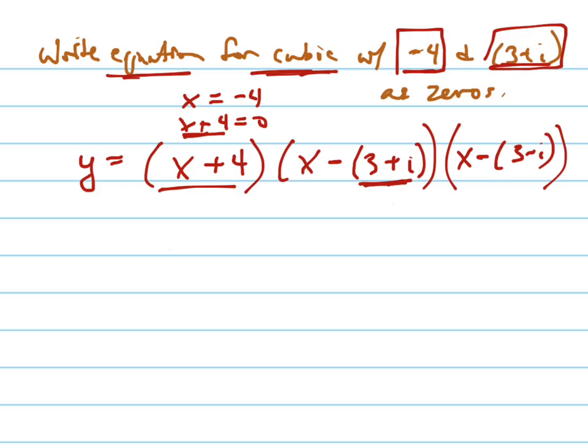The rule is that this pair of linear factors, if you multiply them together—where did you get this from? That's the conjugate of this. See how this is 3 plus i? That's 3 minus i. That's how you know that's got to be there.